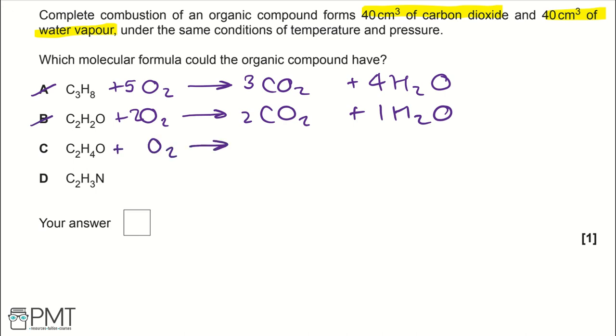If we continue to C and we balance our equation producing carbon dioxide and water, we get a 2 to 2 ratio, and therefore our answer is C because that's the same.